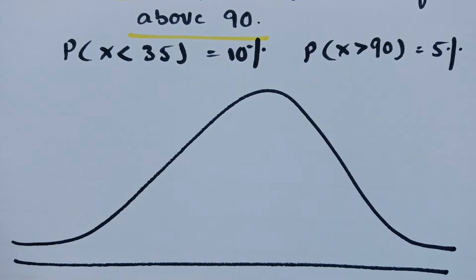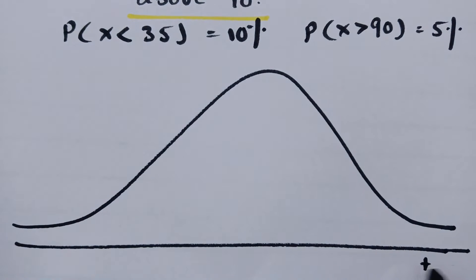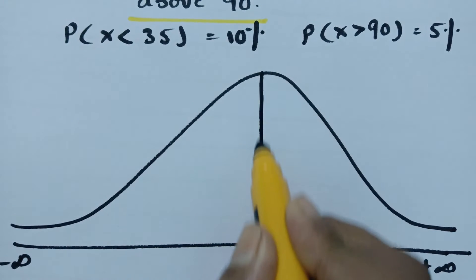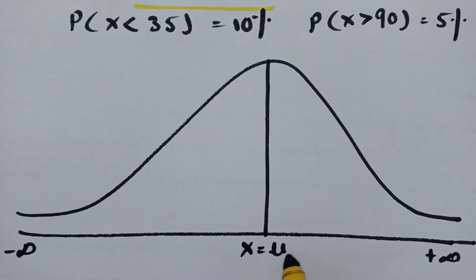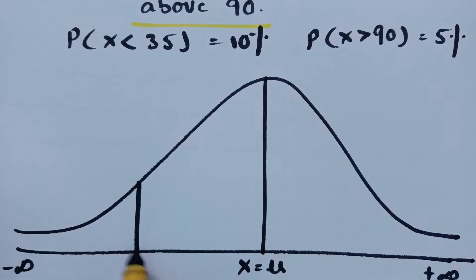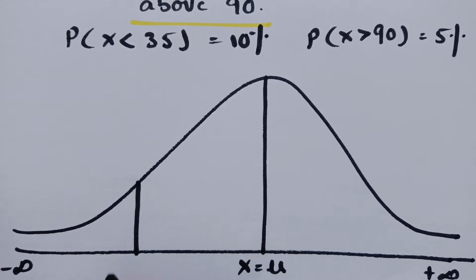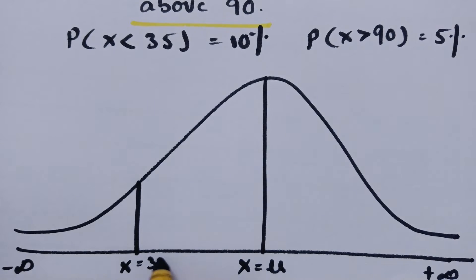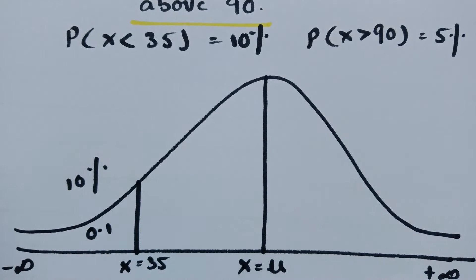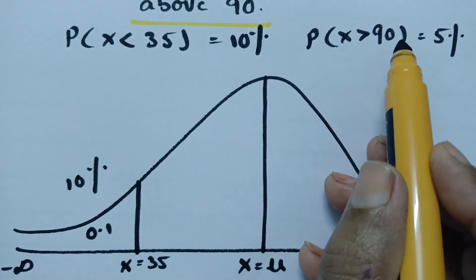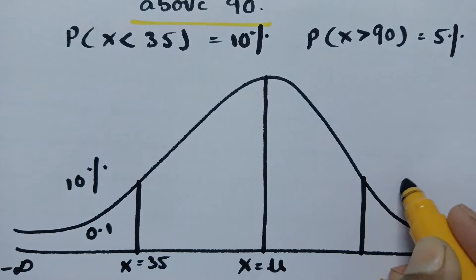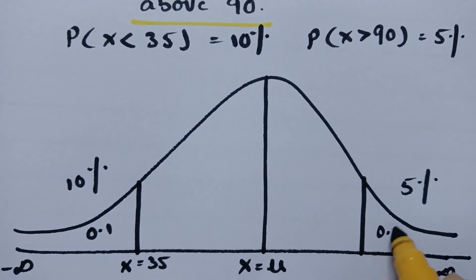As you all know, this is the normal curve. It tends to plus infinity towards the right and minus infinity towards the left. In between, x equals mu, the mean value. From the data, x less than 35 is 10%, which is towards the left side. X equals 35 is 10%, meaning 10/100 equals 0.1. X greater than 90 is a positive value towards the right side of the curve, and that value is 5%, that is 0.05.